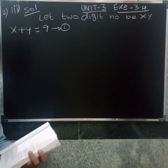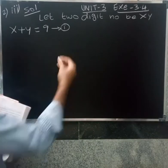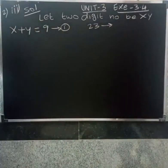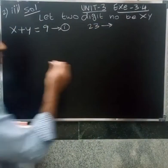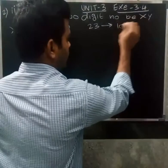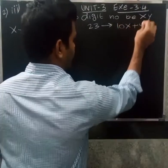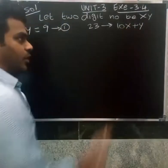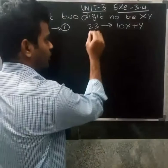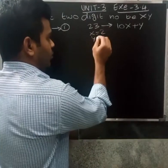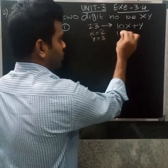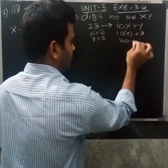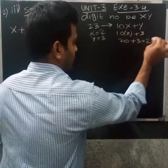Now, the two-digit number — for example, 23 — can be expressed using the expand formula. The two-digit number is 10x plus y. For example, if x equals 2 and y equals 3, then 10 into 2 plus 3 equals 20 plus 3, which equals 23.